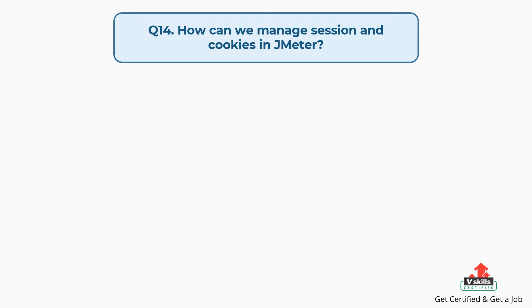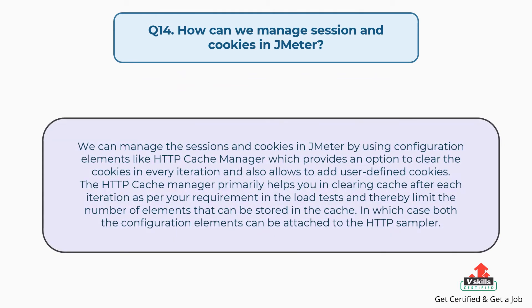Question 14: How can we manage sessions and cookies in JMeter? We can manage sessions and cookies using configuration elements like the HTTP Cookie Manager, which provides an option to clear cookies in every iteration and allows adding user-defined cookies. The HTTP Cache Manager helps in clearing cache after each iteration and limits the number of elements stored in cache. Both configuration elements can be attached to the HTTP Sampler.